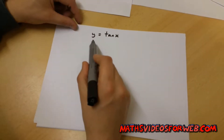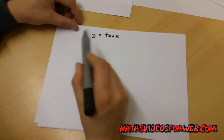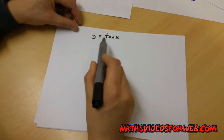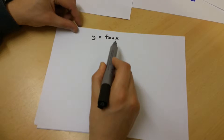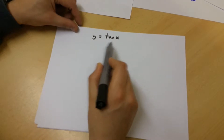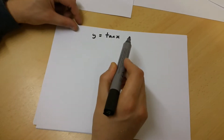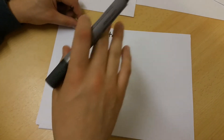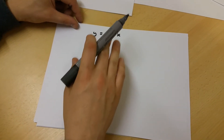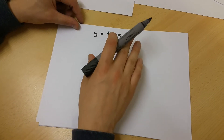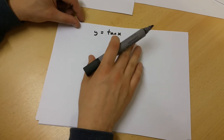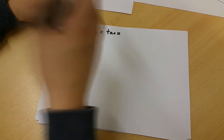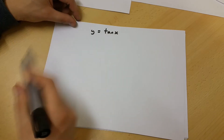In this video, I'll be showing you how to differentiate y equals tan x using a different method. I'm still going to be using implicit differentiation, but this method isn't going to be similar to the one I've used previously.